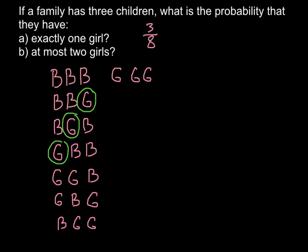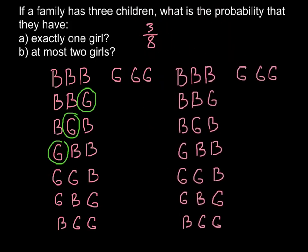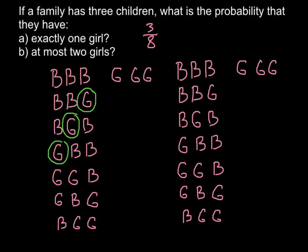And the second question: at most two girls. Let's do the counting once again. So once again we have the same table, and let's count this time.